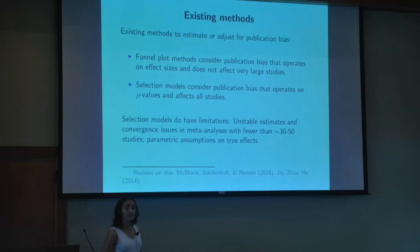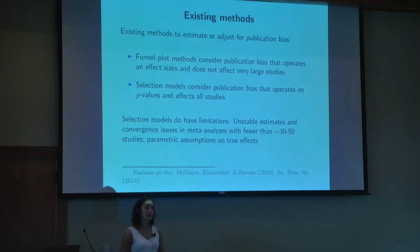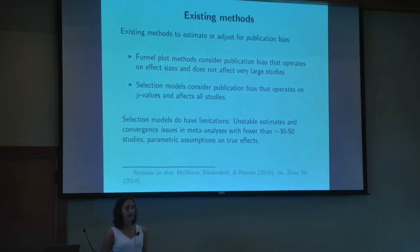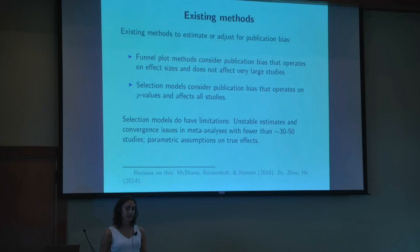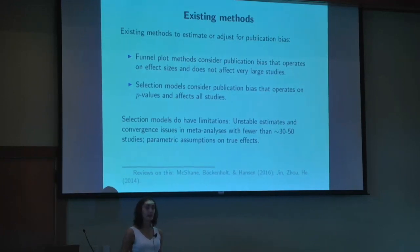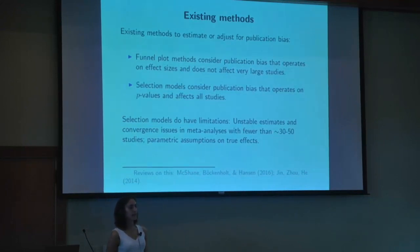An arguably more realistic class of models is selection models, which assume that publication bias operates on statistical significance and affects all studies. I like selection models — they're a very sensible default method — but they do have challenges. They're likelihood-based methods that can be difficult to fit when you have fewer studies, sometimes even fewer than 30, which is the majority of meta-analyses. They also typically make parametric assumptions on the effects, such as normally distributed effects, which can be unverifiable in practice.